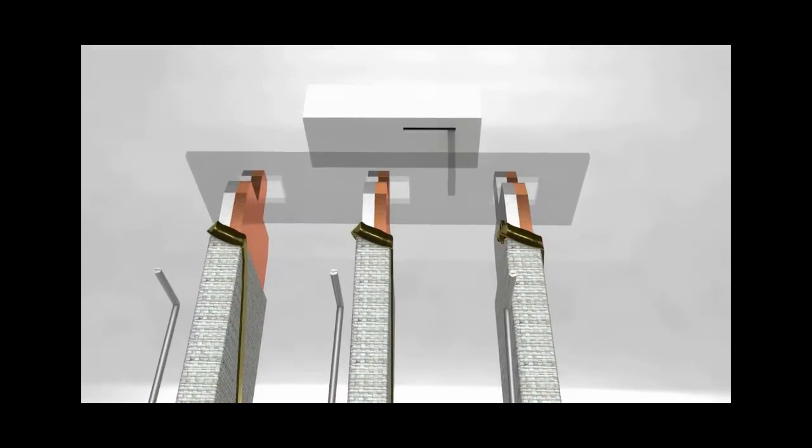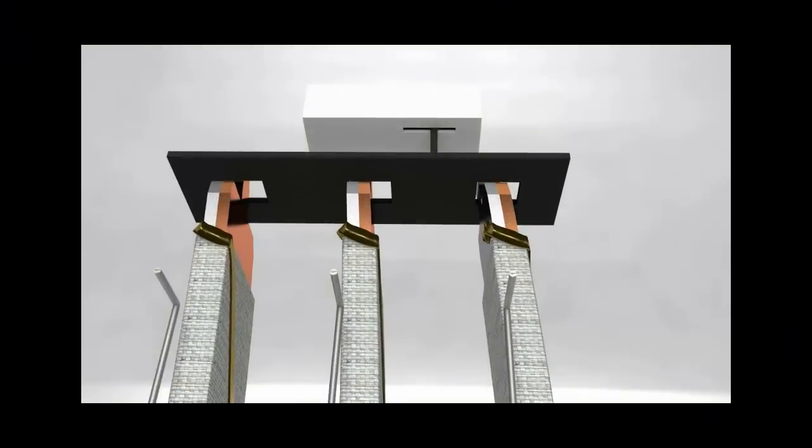When it bends, it moves the black piece called a trip slide that is connected to the trip unit. Once it moves the slide a certain distance, it trips, and the normally closed opens and the normally open closes.